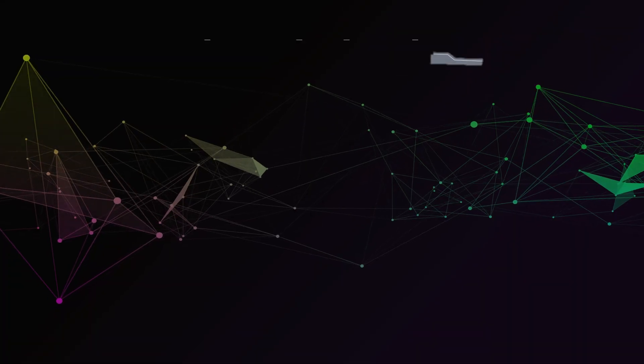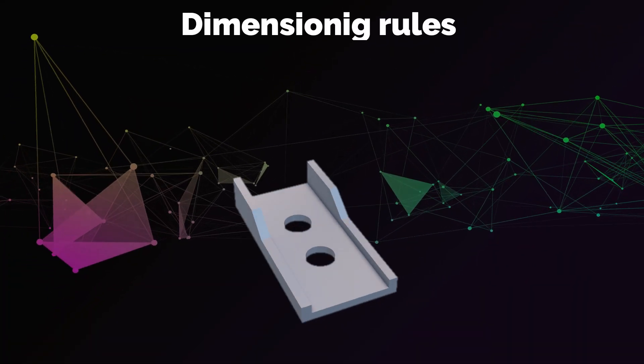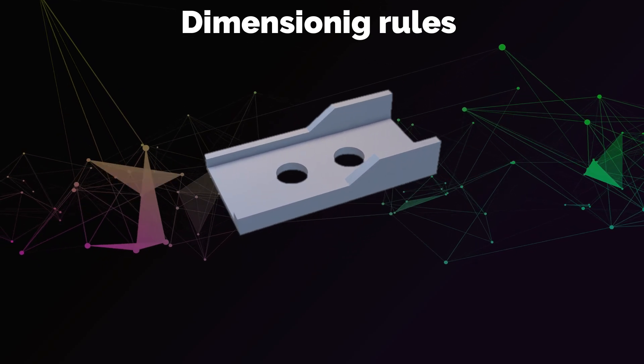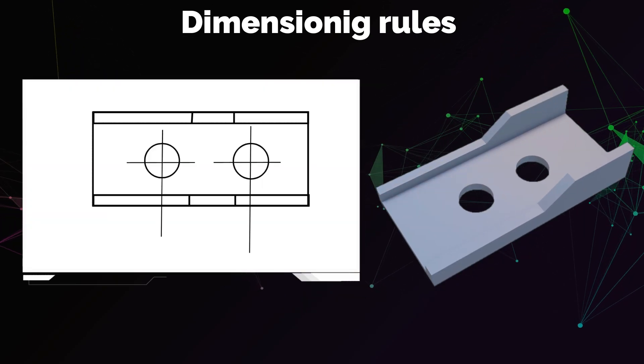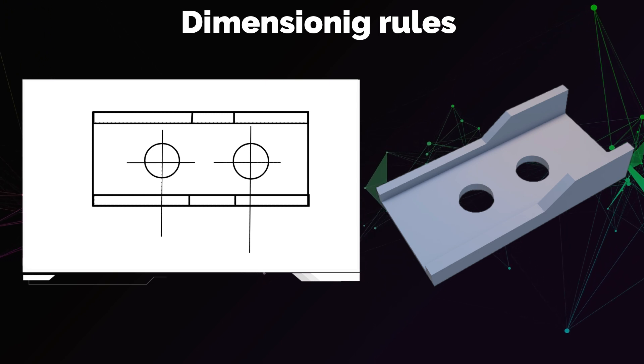So, let's go back to the example from the last lecture where we had a simple metal bracket with two holes. Let's assume that we want to dimension the position of these two holes. Now there are three methods of placing those dimensions in relation to one another.